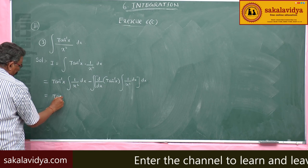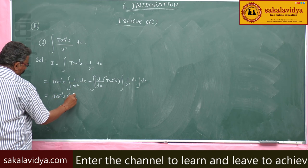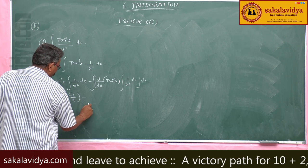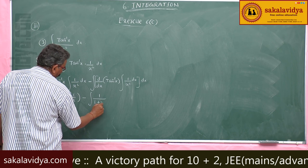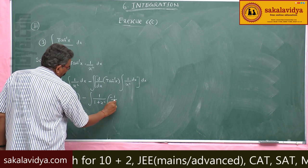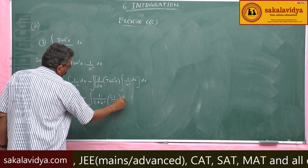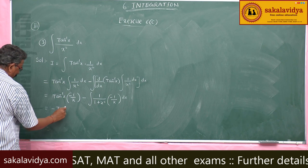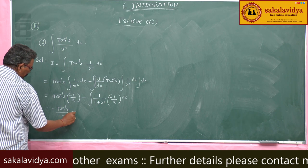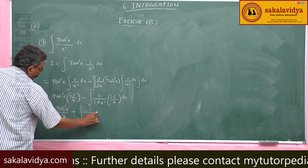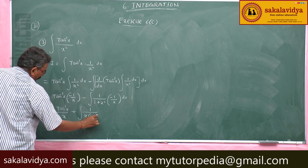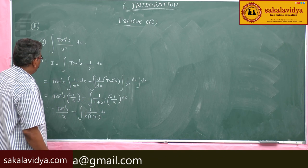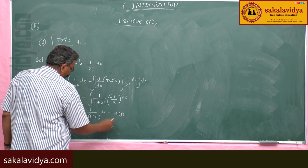Applying integration by parts: tan inverse x times minus 1 by x, minus the derivative of tan inverse x which is 1 by 1 plus x squared, times the integral of 1 by x squared dx. This gives minus tan inverse x by x, plus integral of 1 by x times 1 plus x squared dx. Call this equation 1.